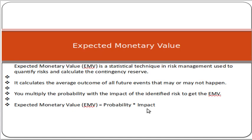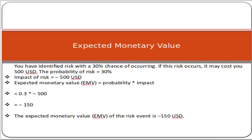Here is a worked example. You have identified a risk with a 30% chance of occurring. If that risk occurs, it may cost you $500 USD. So the probability of the risk is 30% and the impact is $500.